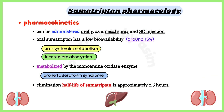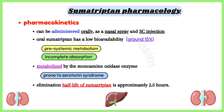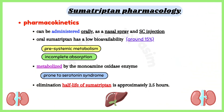Sumatriptan can be administered orally, as a nasal spray, or as a subcutaneous injection. Orally administered sumatriptan has a low bioavailability of around 15%, primarily due to pre-systemic metabolism and partly due to incomplete absorption. The elimination half-life of sumatriptan is approximately 2.5 hours.